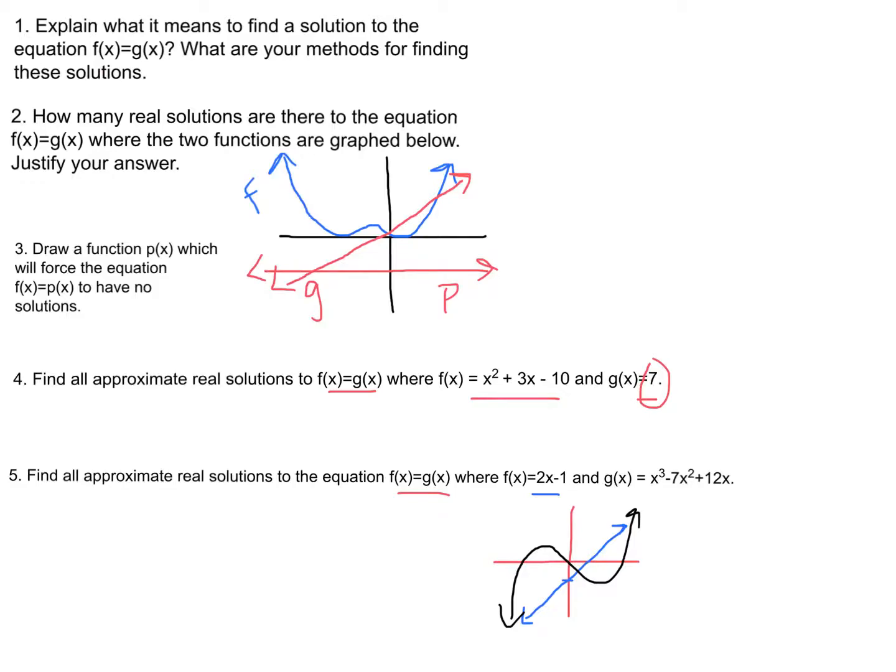And so just like you might have done for number four, you're going to make a table. And this table, so you're going to have the x values that you're trying. And then you're going to plug them into both f and g. Because you want to see when they're equal. So for example, I'll just give you an example.